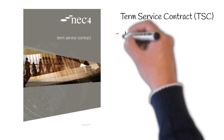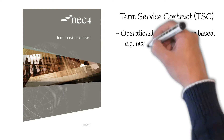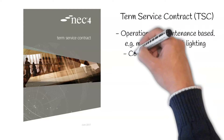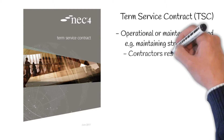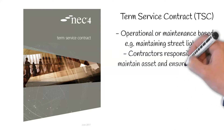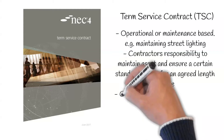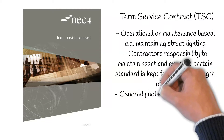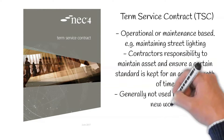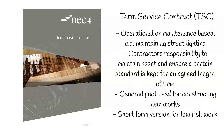Term Service Contract, or TSC. This is for a project which is operational or maintenance-based. For example, maintaining a highway asset like street lighting. It will be the contractor's responsibility to maintain the asset and ensure a certain standard is kept for an agreed length of time. This contract isn't generally used for constructing new works. There's also a short-form version of this contract for low-risk work.